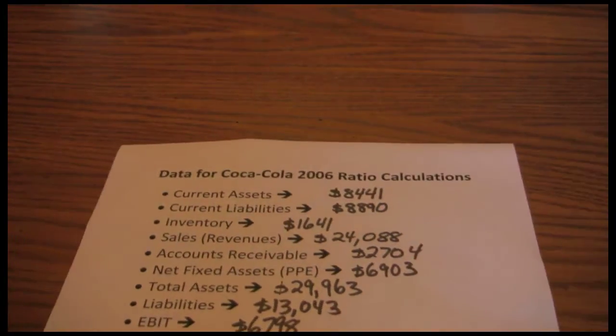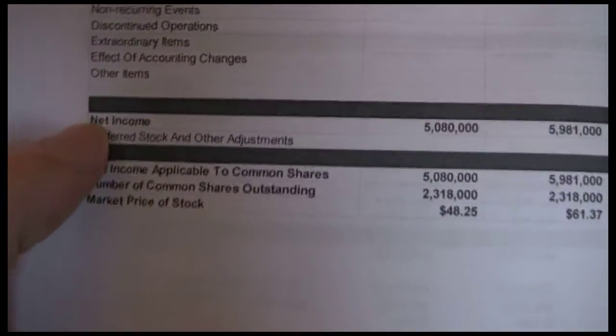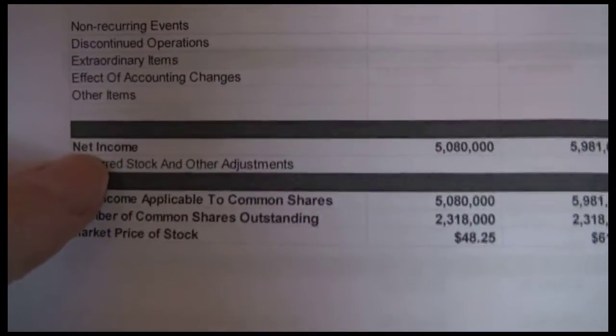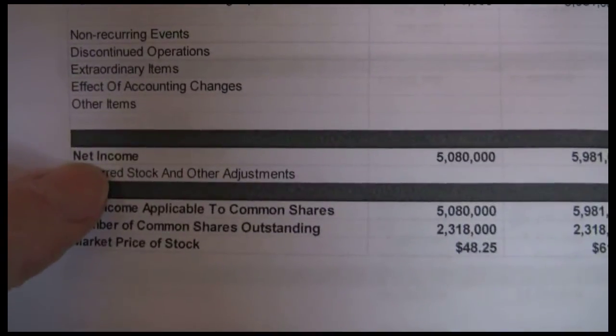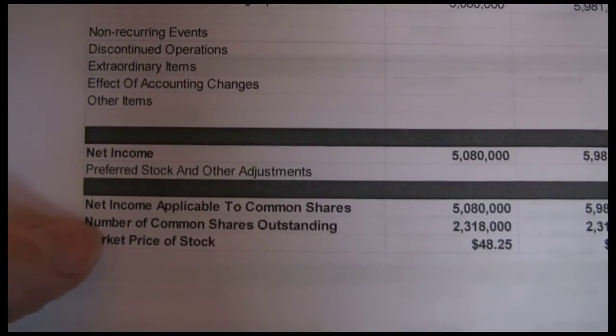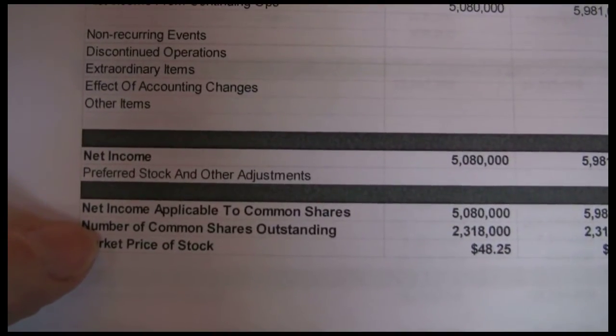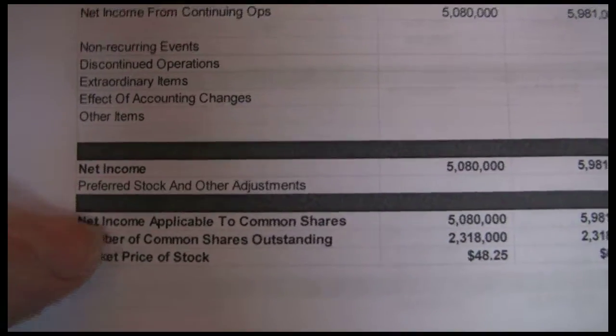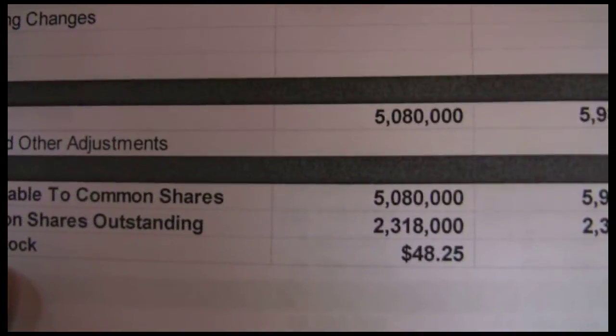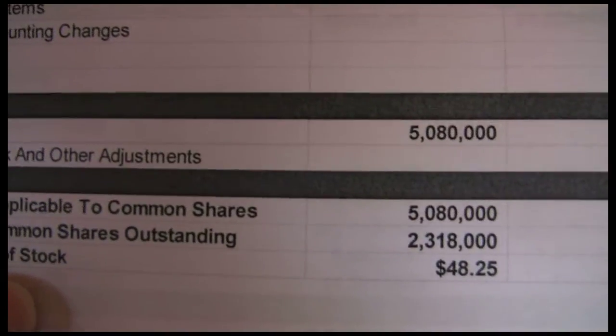Next we go back to net income, which is on the income statement — it's the bottom line. You can see net income, or you can use net income available to common shares — they're both the same thing. That net income line is $5,080.